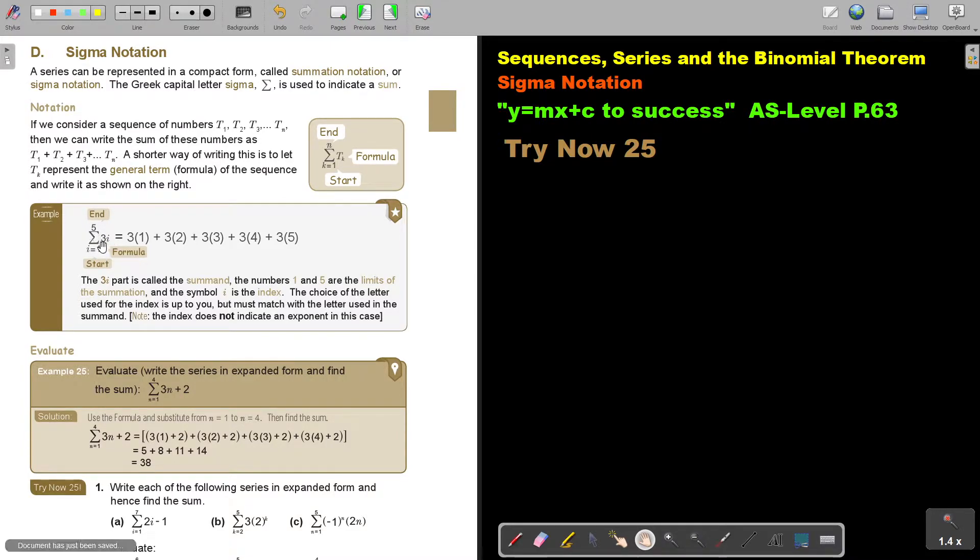Like you count, 2, 3, 4, and I stop at 5. So 3I part is called the Summand.